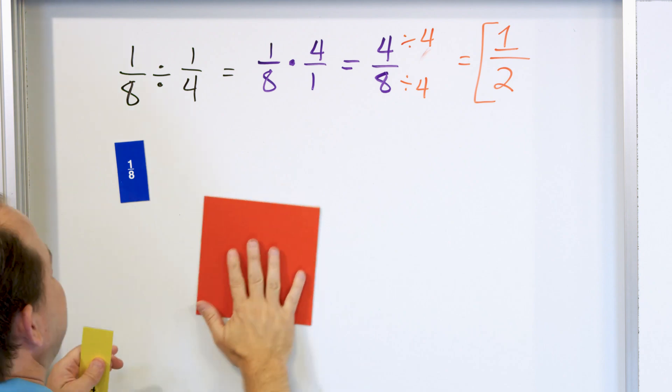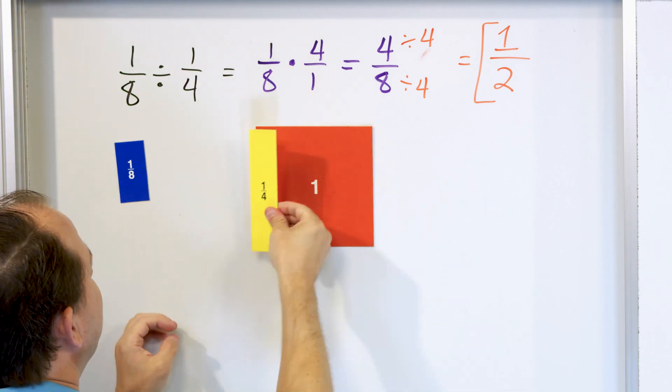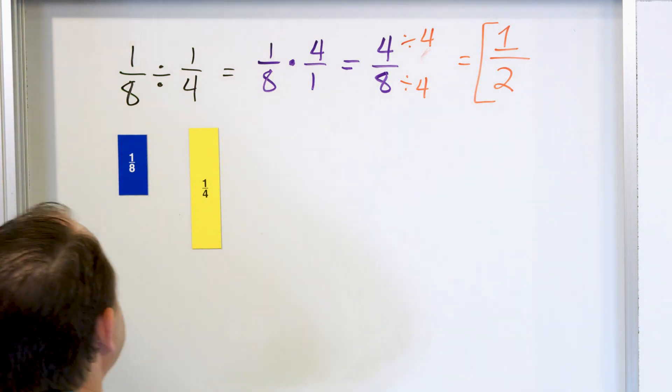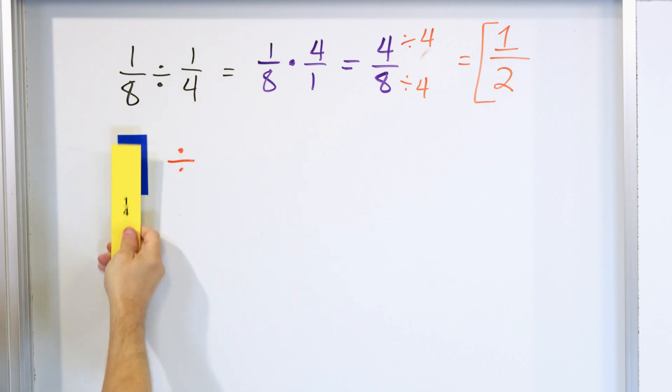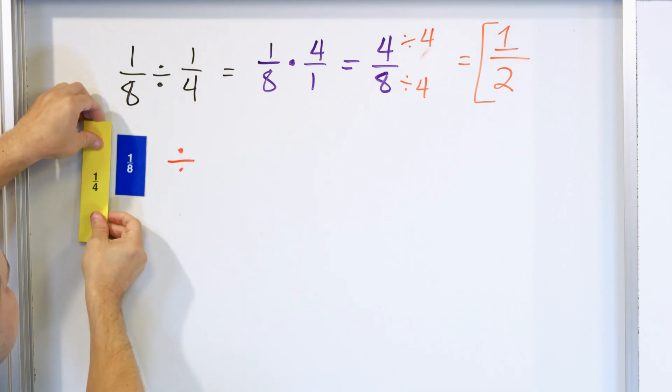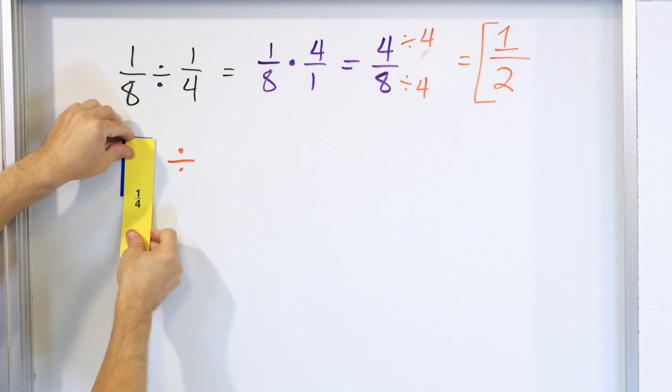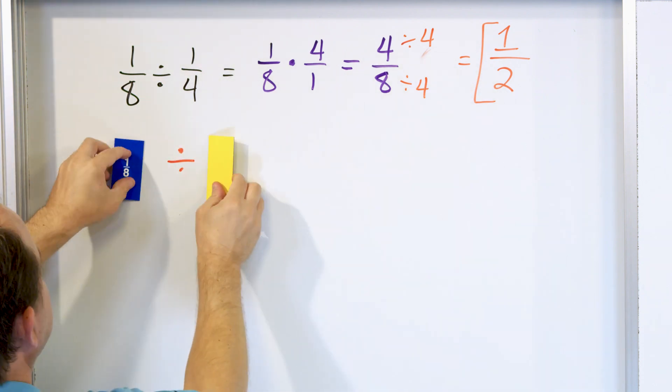Now 1/4 is a little easier to visualize. I just cut it into 1, 2, 3, 4 slices and keep one of them. So this is 1/4 right here. So we've established that what we're doing is we're taking 1/8 and we're dividing it by 1/4. So what we're trying to see is how many times will this thing fit in here? And you can see that it doesn't even go once, but it goes exactly half of a time. Because this can go half of what I'm dividing by will fit in. And so that's why we got an answer of a half right there.